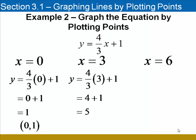When I substitute 3 for x, 4 thirds times 3 is equal to 4, adding 1 gives me 5, for a second ordered pair of 3, 5.